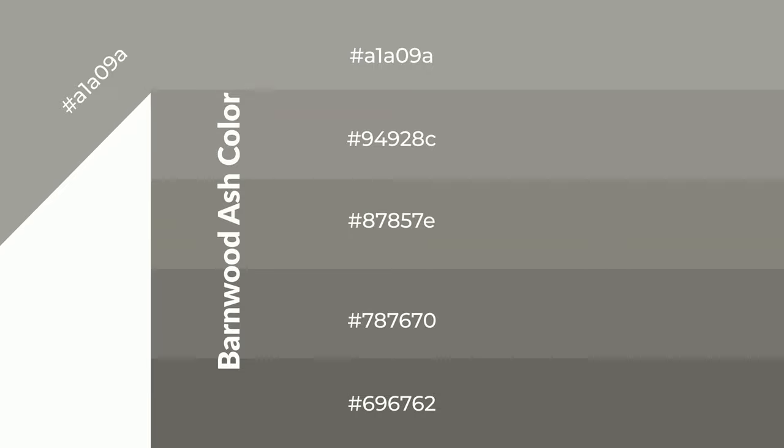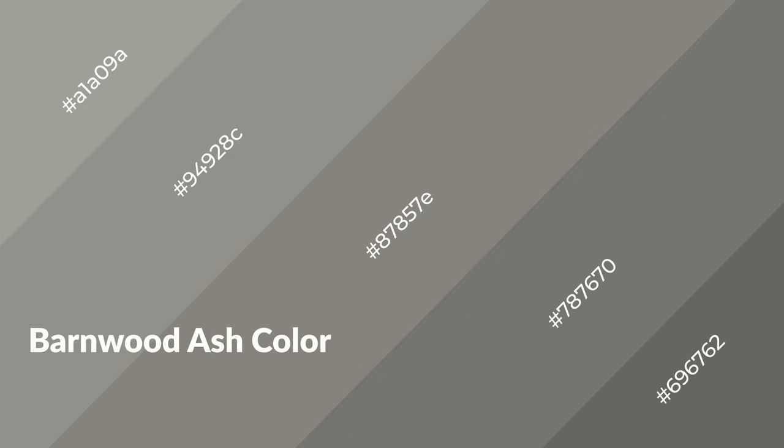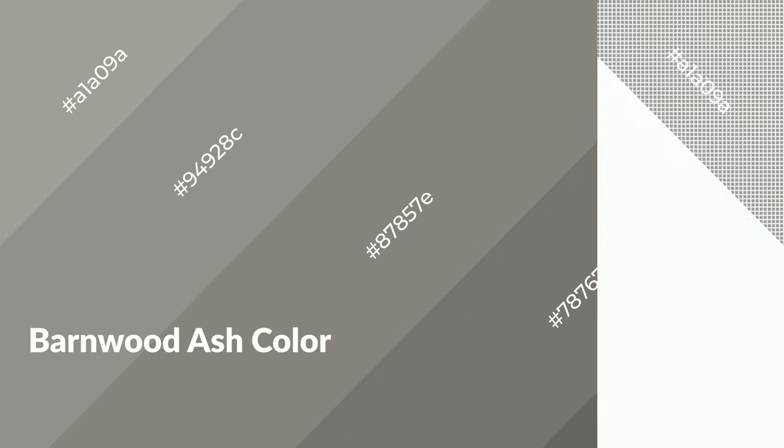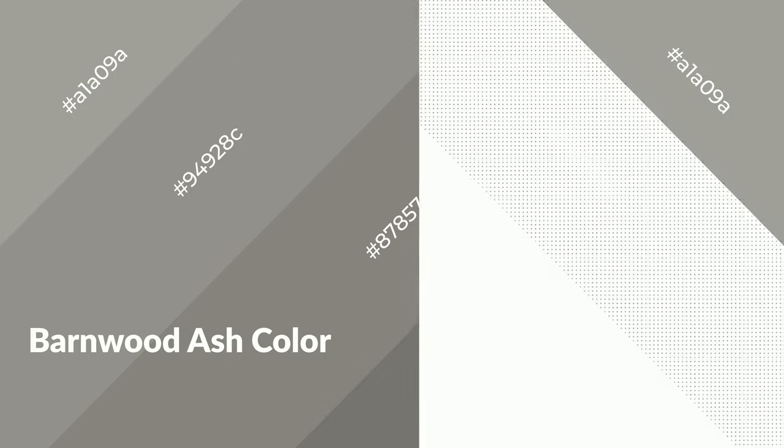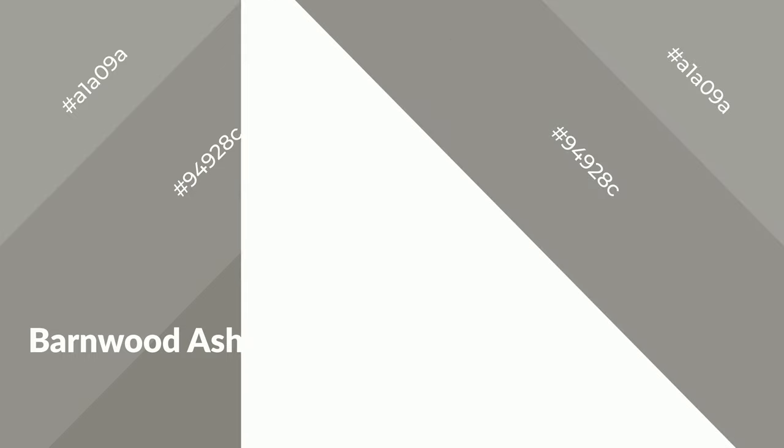To generate shades of a color, we add black to the color. It is used in patterns, 3D effects, and layers. Shades create depth and drama. Barnwood ash is a warm color and it emits cozier and active emotion.